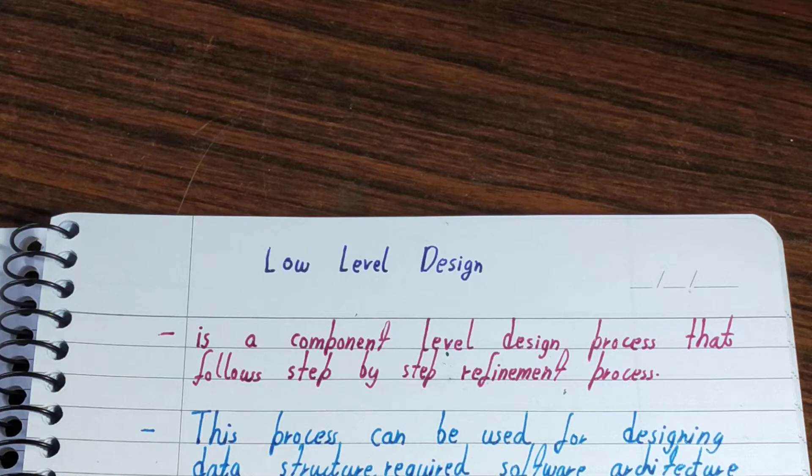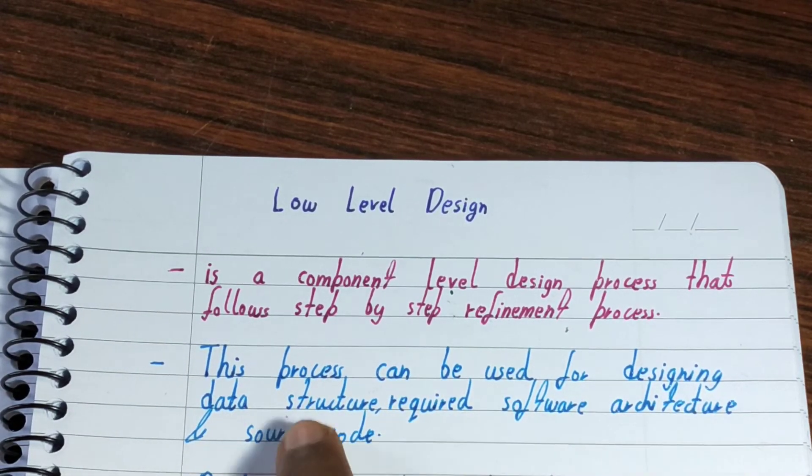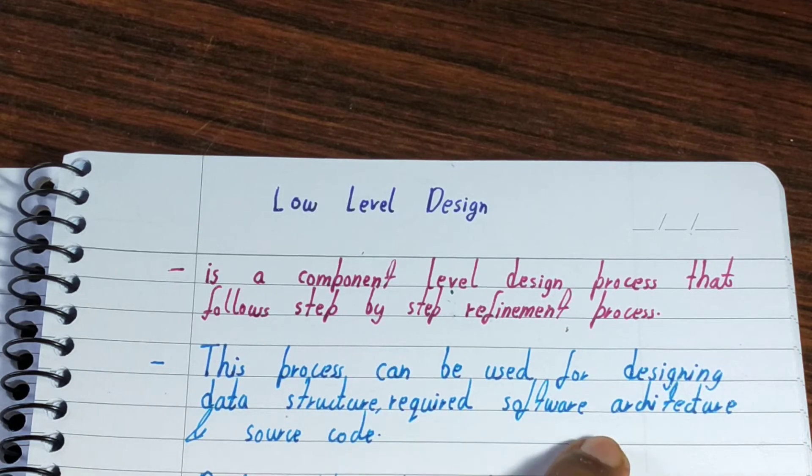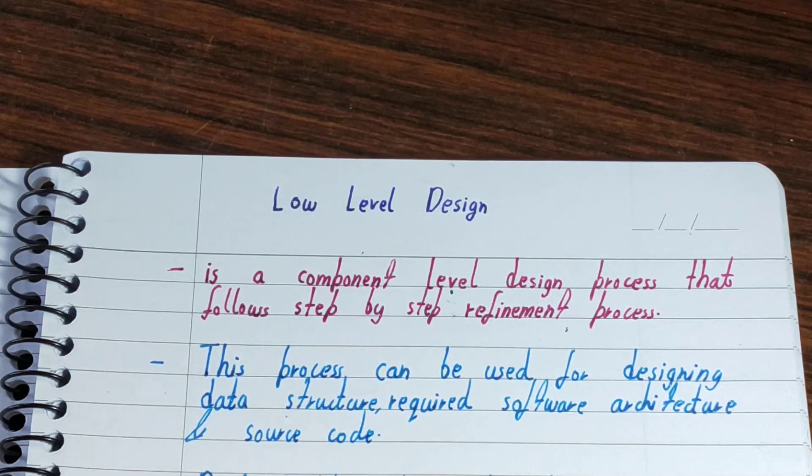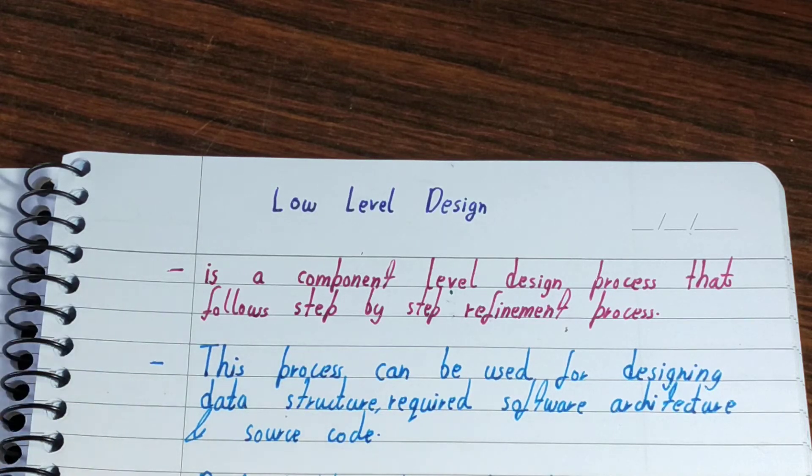This process can be used for designing data structure, required software architecture, and source code. We use low level design for data structure, for designing the blueprint of the software, and also the source code related to each of the components. We want everything in hand before we start working on the actual software. Here we are working on the components.